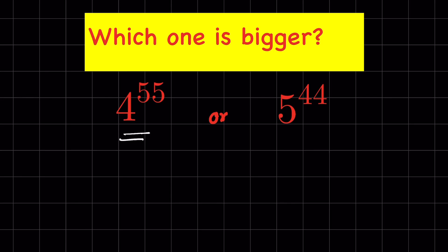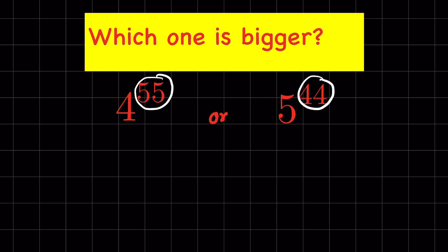Which one is bigger: 4 raised to the power 55, or 5 raised to the power 44? We can compare numbers which have the same base, but here the bases are also different — the base is 4 on one side and 5 on the other. The exponents are also different, so to compare we must get the same base or the same exponent.